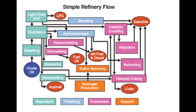Finally, the two major supporting processes — hydrogen production and sulfur recovery — connect all remaining arrows. Hydrogen is used to remove sulfur from crude oil fractions as hydrogen sulfide, and hydrogen sulfide is then converted to elemental sulfur in the sulfur recovery unit. Elemental sulfur is sold as a refinery product. That completes our simple refinery flow.